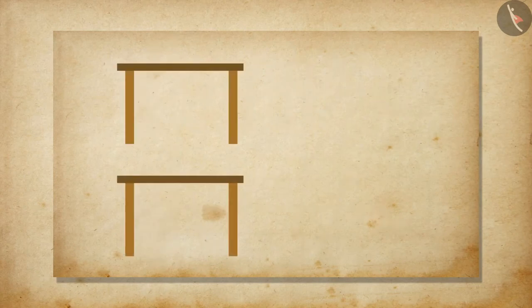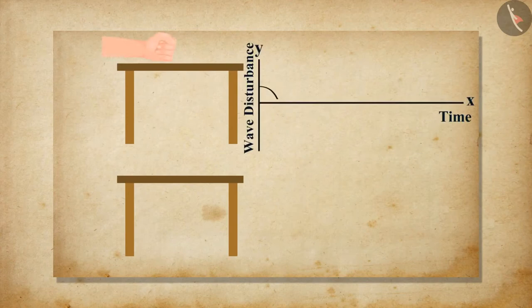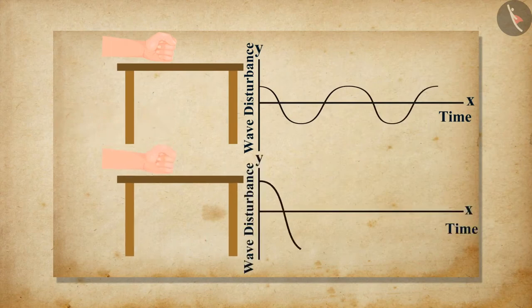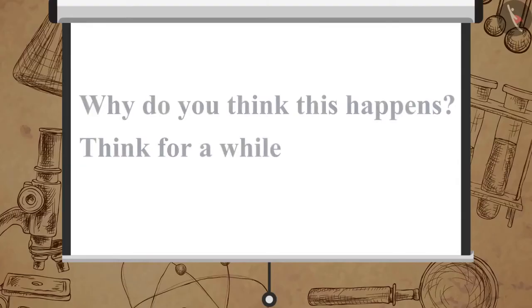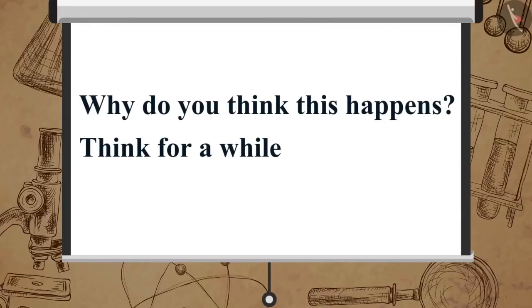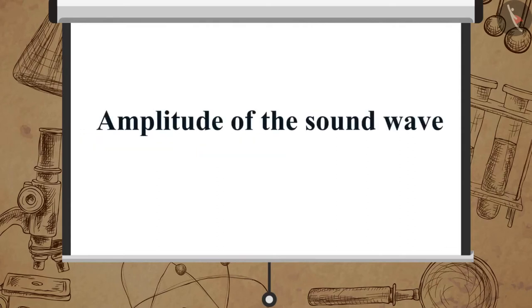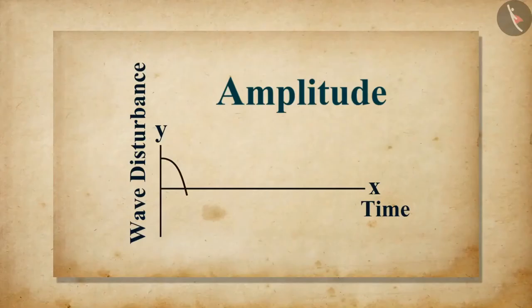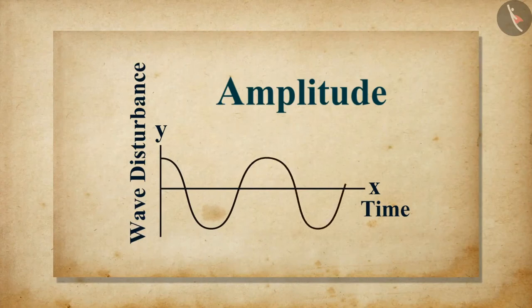Now when we tap a table lightly we hear a soft sound, while when we hit a table hard we hear a loud sound. Why do you think this happens? It happens due to the amplitude of the sound wave. The magnitude of the maximum disturbance in the medium on either side of the mean value is called the amplitude of the wave. It is denoted by A.